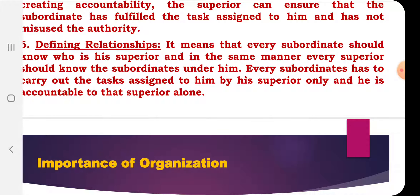The next step is defining relationships. Every subordinate should know who their superior is, and every superior should be clear about who their subordinates are. The superior should know who will report to him, and the subordinate should be clear about whom they report to. Every subordinate carries out the task assigned by their superior and is accountable to that immediate superior.